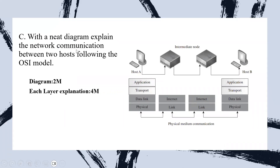With a neat diagram, explain the network communication between two hosts following the OSI model. This is the diagram for this question. Make sure you draw this diagram because they have asked about the OSI model. An OSI model generally has seven layers; in this diagram you specify the more important layers — physical, data link, transport and application layer. They have asked how network communication between two hosts is done, so you tell how physical medium communication takes place between host A and host B. This diagram carries two marks and explanation of each layer with how host communication takes place carries four marks, making it a total of six marks.